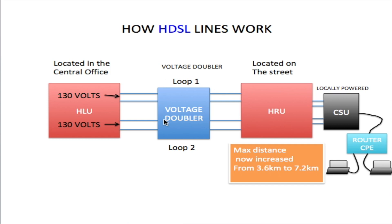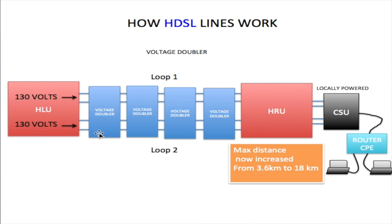We can add a voltage doubler to the line, increasing the distance between the HLU and the HRU to 7.2 kilometers. Every time you add a voltage doubler, you increase the distance by 3.6 kilometers. With one voltage doubler the distance is 7.2 kilometers, and with four voltage doublers the distance increases from 3.6 kilometers to 18 kilometers. So the subscriber can be 18 kilometers away from the HLU — this is one of the advantages of using an HDSL line.